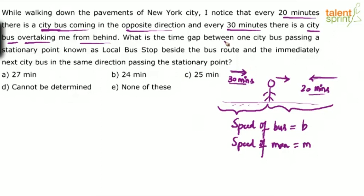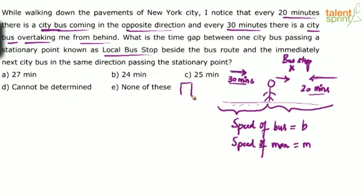Now, the question asks: what is the time gap between one city bus passing a stationary point — a local bus stop beside the bus route — and immediately the next city bus in the same direction passing that stationary point? So this is the bus route and this point here is the bus stop. Buses are coming out from a source at regular intervals and moving in one direction. Similarly, buses from the other end are also coming out at regular intervals. All buses travel at the same speed.